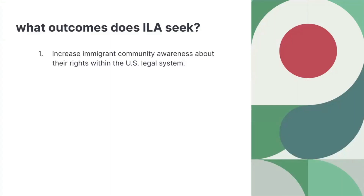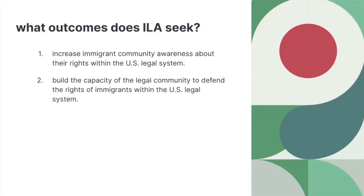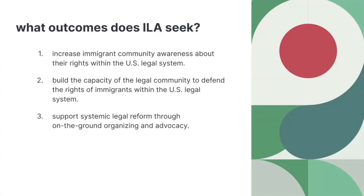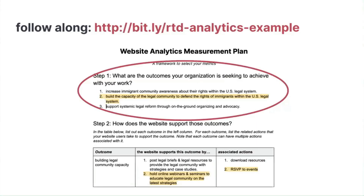An outcome is how the work you do impacts or affects the communities and individuals you are in service to. We're not talking about metrics; we're not talking about our website. We're trying to start this whole process at sort of a 30,000-foot level. So let's look at ILA's three outcomes: first, to increase immigrant community awareness about their rights within the U.S. legal system; second, to build the capacity of the legal community to defend the rights of immigrants; and third, to support systemic legal reform through on-the-ground organizing and advocacy.